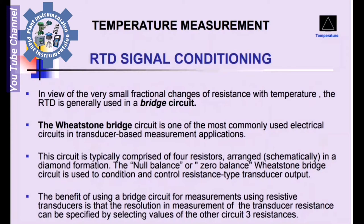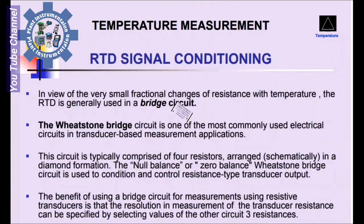RTD Signal Conditioning: In view of the very small fractional changes of resistance with temperature, the RTD is generally used in a bridge circuit. The Wheatstone bridge circuit is one of the most commonly used electrical circuits in transducer-based measurement applications. The bridge typically comprises four resistors arranged schematically in a diamond formation. The null-based or zero-balance Wheatstone bridge circuit is used to condition and control resistance-type transducers.